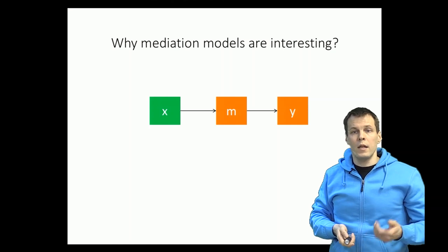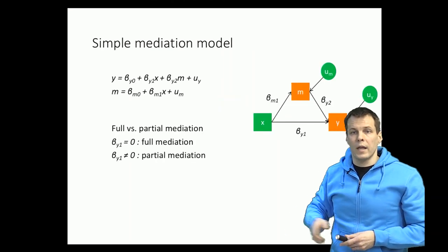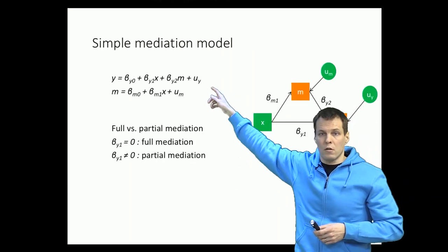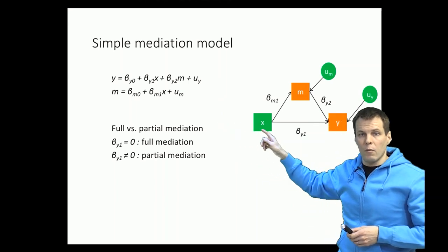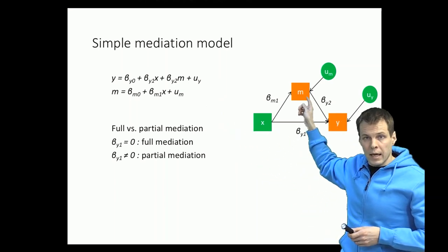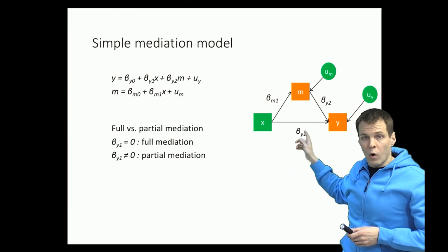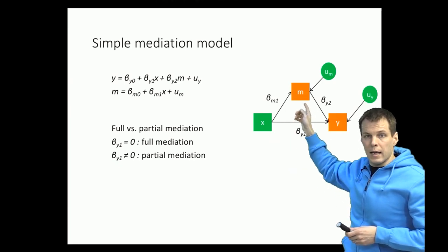The idea of a simple mediation model is that we have here two recursive models. We have a model of m, the mediator, depends on x, and then y, the final dependent variable, depends on m and x.